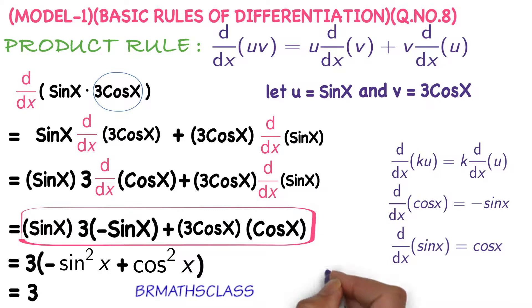Here, trigonometry formula: cos 2x equals cos squared x minus sin squared x. So cos squared x minus sin squared x, we can write as cos 2x. Therefore, derivative of sin x into 3 cos x is 3 cos 2x.